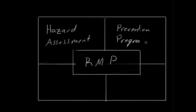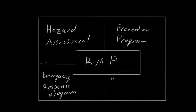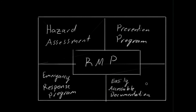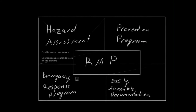The RMP is composed of four elements: a hazard assessment, a prevention program, an emergency response program, and an easily accessible documentation. The hazard assessment is a consequence analysis that takes into consideration worst-case scenarios of the release of flammable materials and toxic substances, in addition to more likely scenarios such as history of releases at the facility and alternative release scenarios for toxic and flammable substances reaching off-site locations. Emphasis is placed on scenarios that have a potential to reach off-site populations. The hazard assessment is only an analysis of the consequences of releases, and not the probability of said releases.